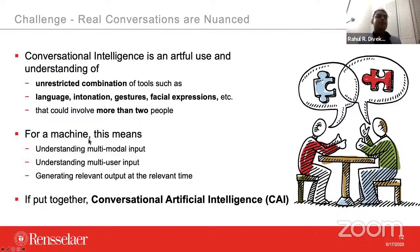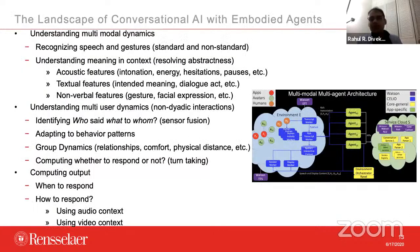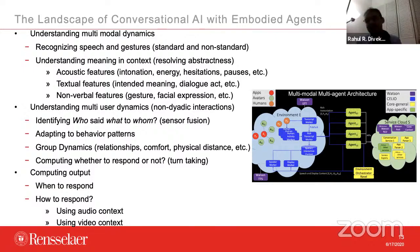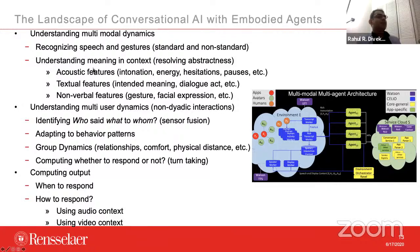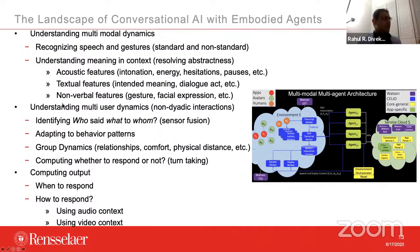To give you a brief idea of what goes into conversational AI: first, multimodal dynamics — understanding speech and gestures, both standard and non-standard. Standard means there are published data sets for speech recognition and gesture recognition, but real life is not a data set. It differs from what's represented in data sets and AI agents must still understand it. The second part is understanding meaning in context — using intonation, hesitations, not just what is said but how it is being said along with gesture and facial expression, because even a simple pause communicates that someone wants to stress on something.